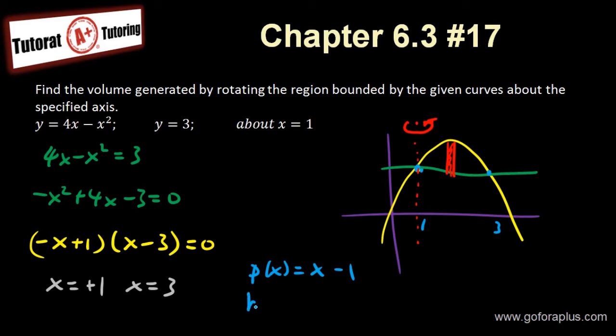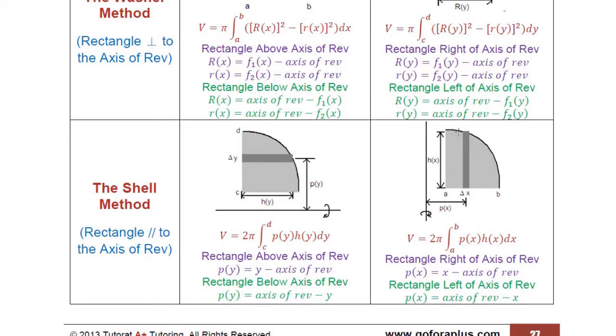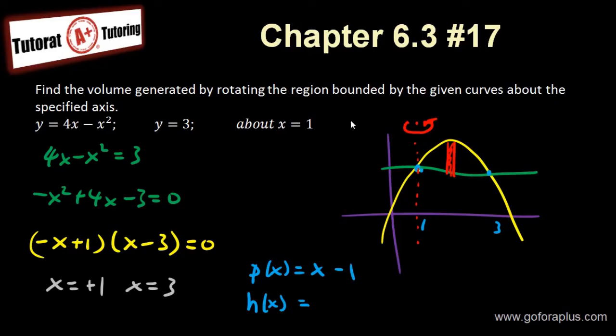Now, how about my h? h of x is basically the top function subtract the bottom function. So that's top function is 4x minus x squared subtract the bottom function, which is 3. So I basically end up with minus x squared plus 4x minus 3. That's my h.